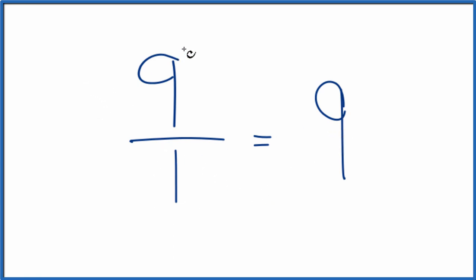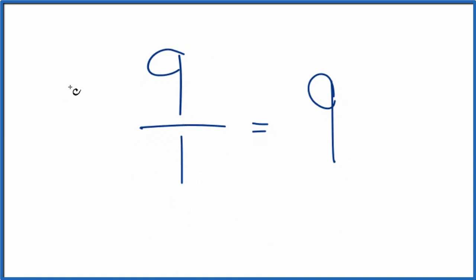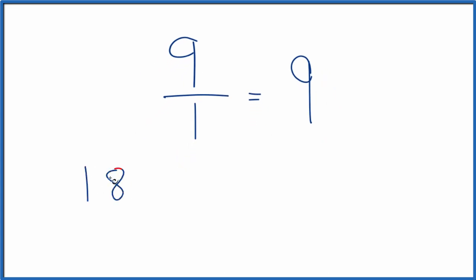We could multiply both the numerator and the denominator by 2. We could double it. That would give us another equivalent fraction. 2 times 9, that's 18. 2 times 1 is 2. So 18 over 2, that's an equivalent fraction to 9 over 1 and the whole number 9. Divide 18 by 2, you get 9.